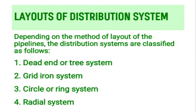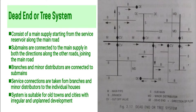First, we look at the dead end or tree system. It consists of a main supply starting from the service reservoir along the main road.